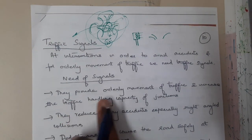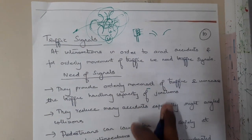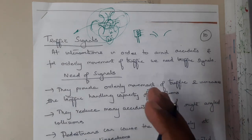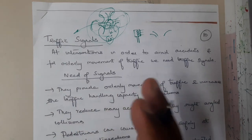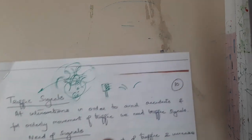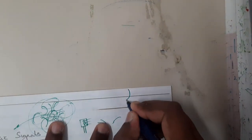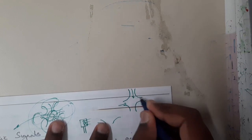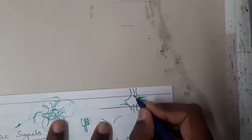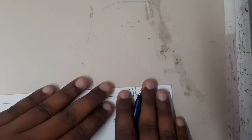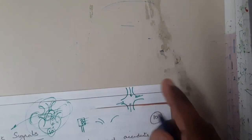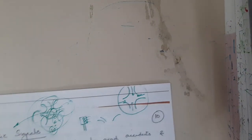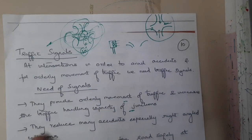The need for signals: they provide orderly movement of traffic and increase the traffic handling capacity at junctions. Controlling traffic at junctions is really tough because four different routes combine. If a heavy vehicle comes from two lanes and slowly blocks the whole junction, that would be a huge issue. Using signals, we can manage this with ease.